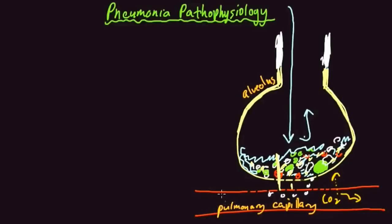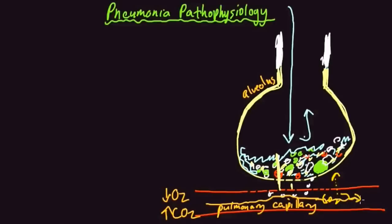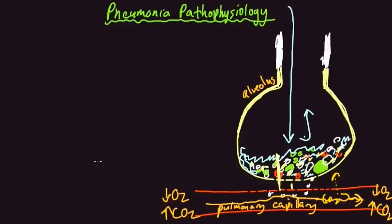CO2 continues down, and you end up in a situation where the blood — which was low in O2 and high in CO2 — is unable to have any gas exchange at this alveolus-pulmonary capillary junction. The same blood travels to the left heart and out to the body. If this were only happening in a handful of alveoli it wouldn't be a big deal, but in a serious pneumonia this is happening in a significant portion of the body's alveoli.